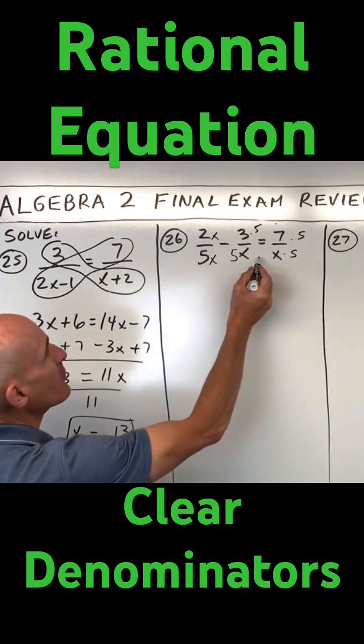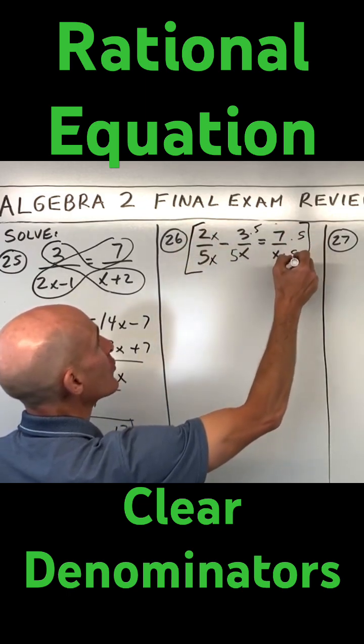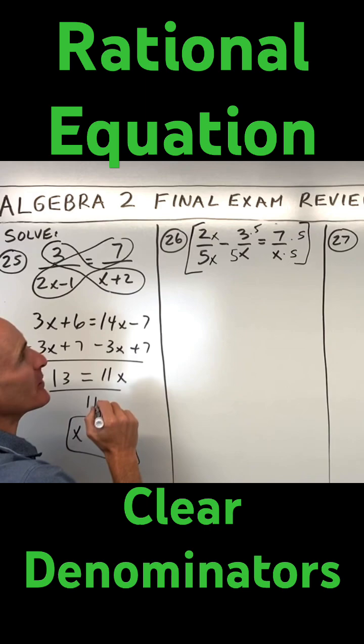So now we can see that all of these have a denominator of 5x. If I multiply through this whole equation by 5x, that clears the denominators.